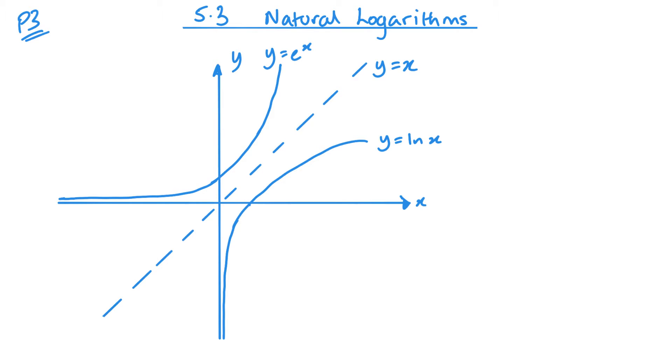And what you will notice is that the graph y equals ln x is only defined for positive values of x. It's only in this positive section of my graph.